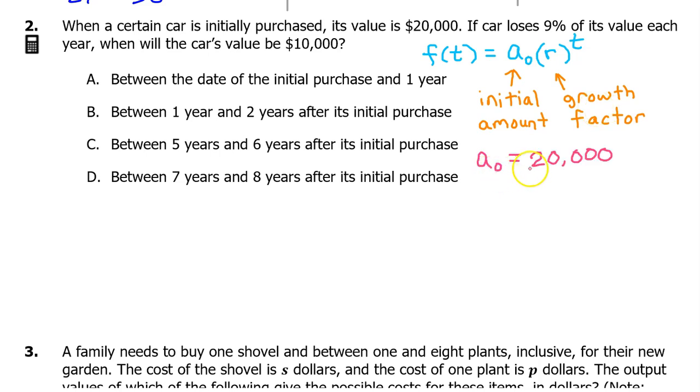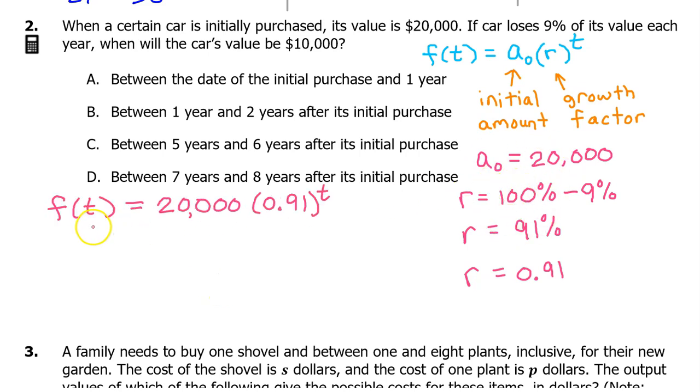In this case, a_0 is the initial value of 20,000. Since the car loses 9% of its value each year, you can find the growth factor by subtracting 100% minus 9%. That's 91%, or 0.91 as a decimal. If this were something appreciating or increasing by 9% each year, we would do 100% plus 9%. That would be 109%, or as a decimal, 1.09, and that would be the growth factor. Putting it all together, the value of the car after t years can be modeled by 20,000 times 0.91 to the t power.